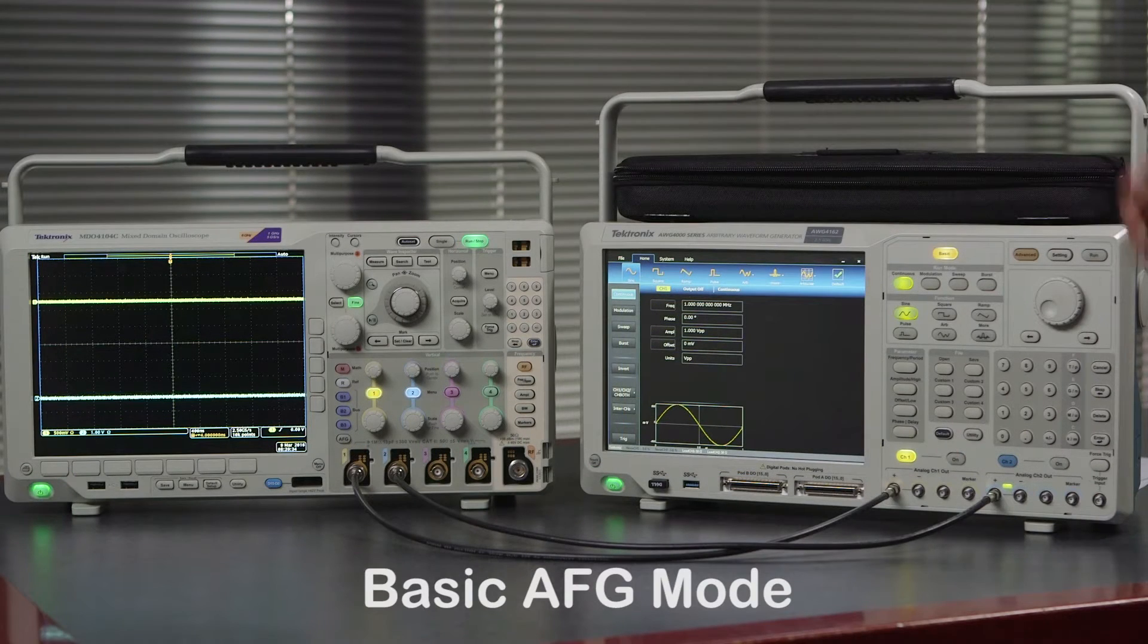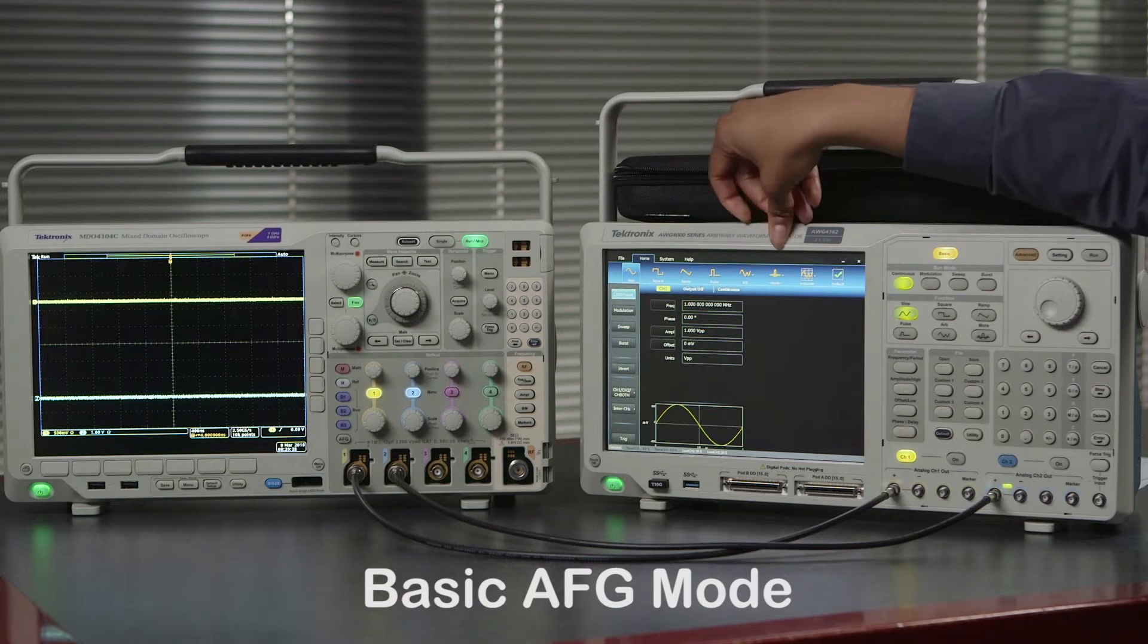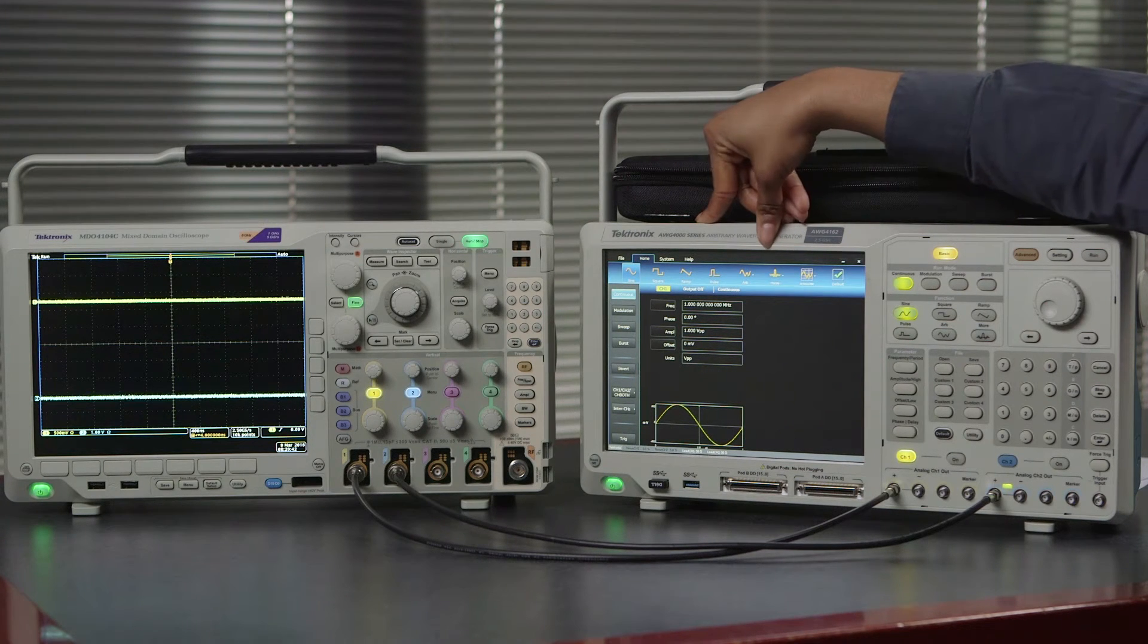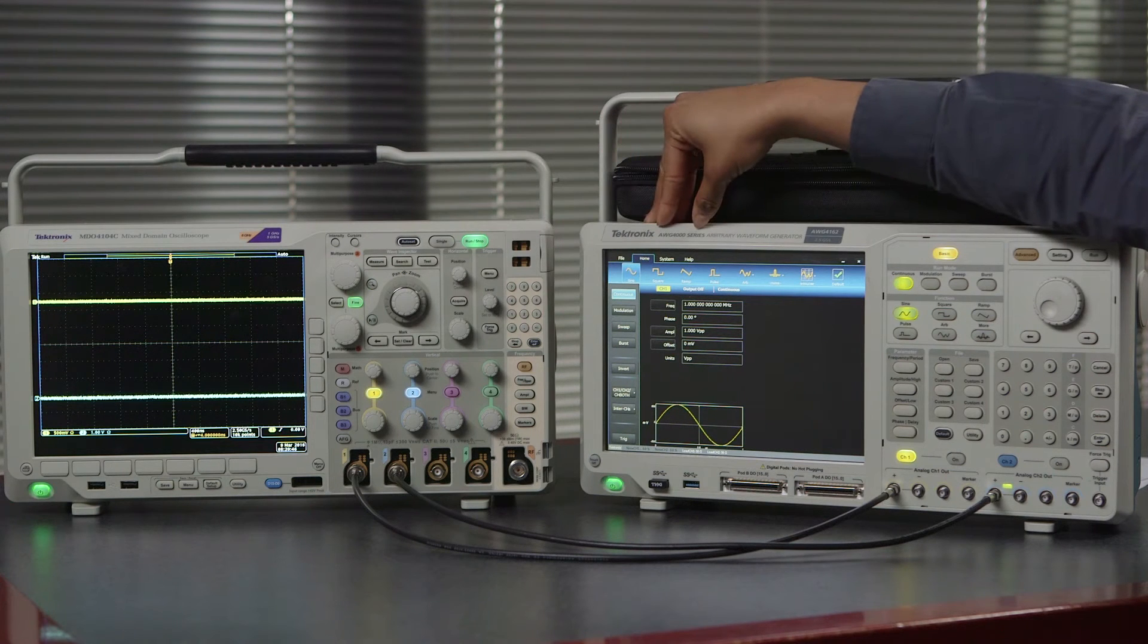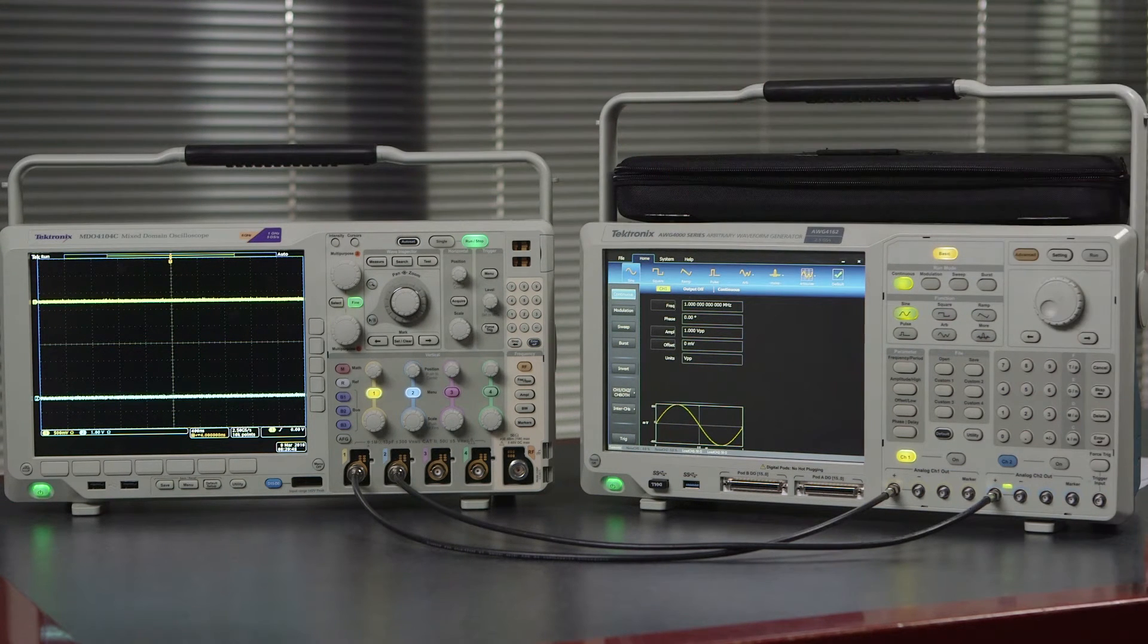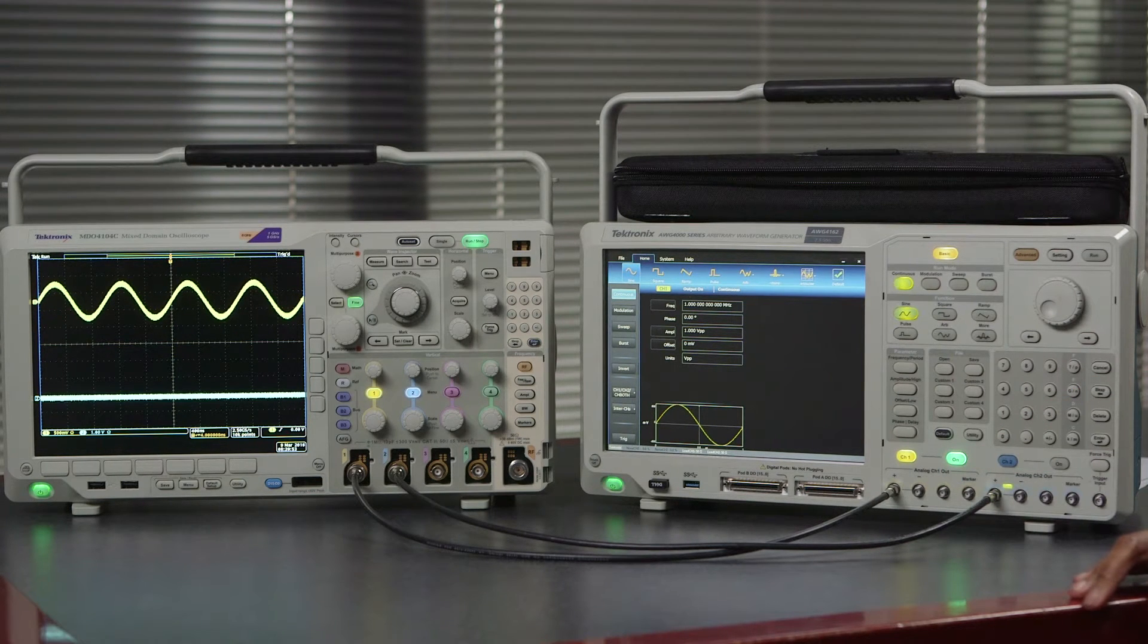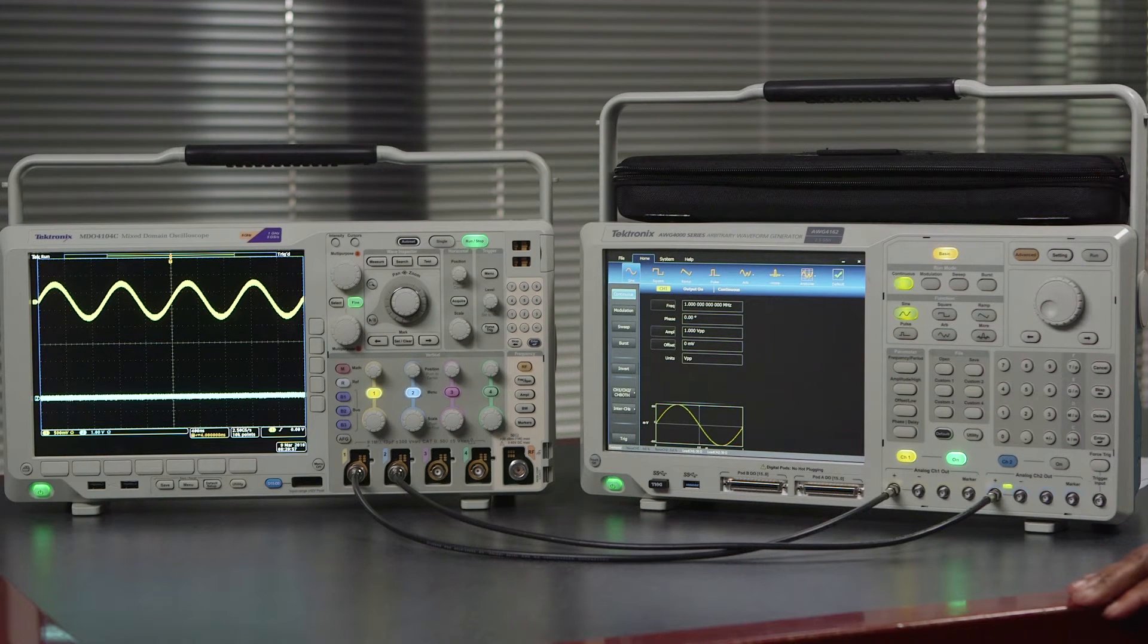We can go ahead and go into basic mode which gives us most of the basic functions we'll need during simple signal generation. We're going to start with the sine wave. First we can activate the sine wave by pressing the button. We also make sure to turn on the channel out by pressing the on channel button here. You can see an immediate response on the MDO 4000 where our 1MHz signal has already started.